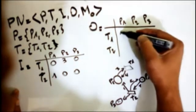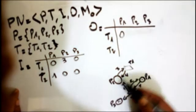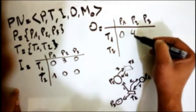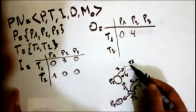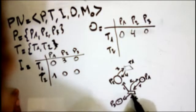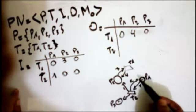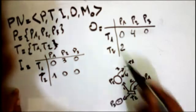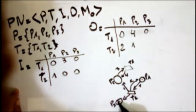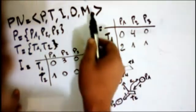T1 to P3 is also 1. Now for T2: T2 to P1 — this edge is labeled 2. T2 to P2 — this edge is labeled 1. T2 to P3 — there is no label on this edge, which means 1. That completes the output matrix O.